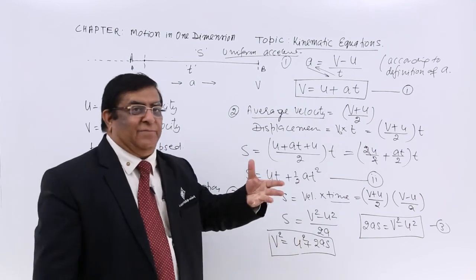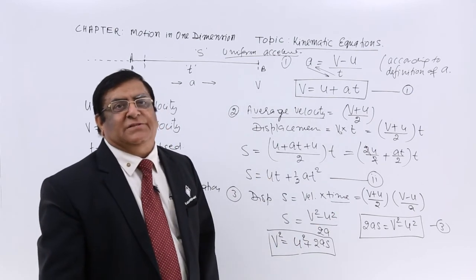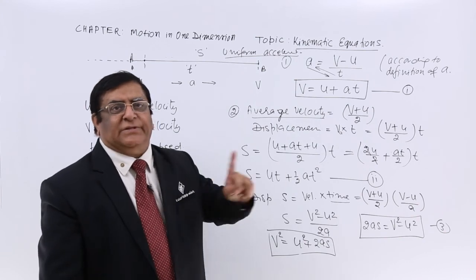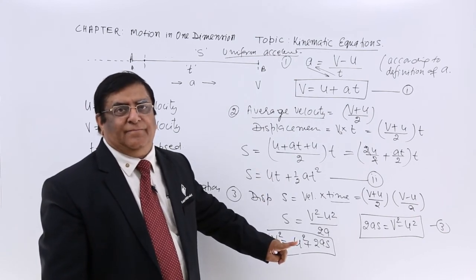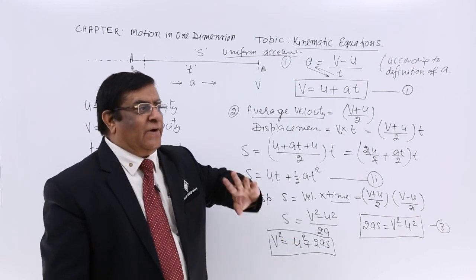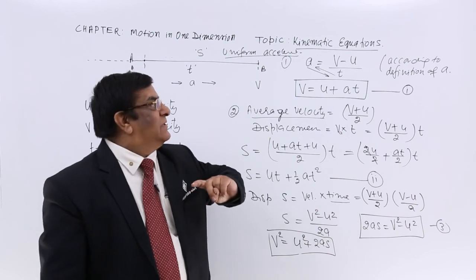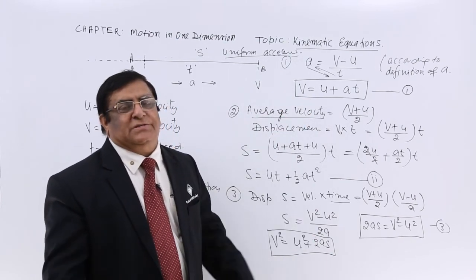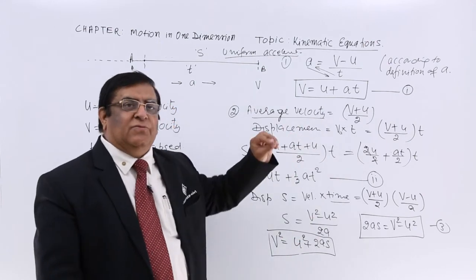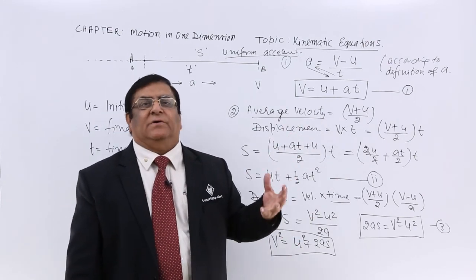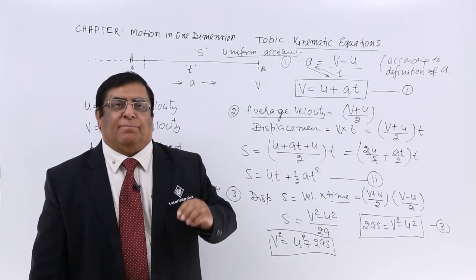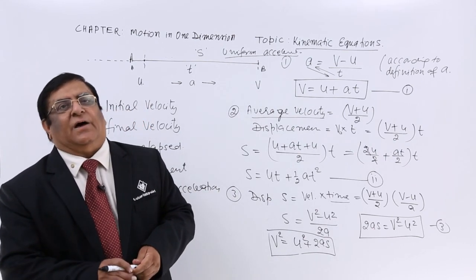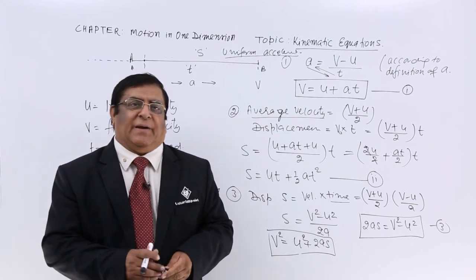You do not need time in equation 3. So for calculating S you have two options — with time (equation 2) or without time (equation 3). For finding final velocity you also have two options — with time (equation 1) or without time (equation 3). You will have to find out which formula suits best for a given problem. These are the famous kinematic equations.